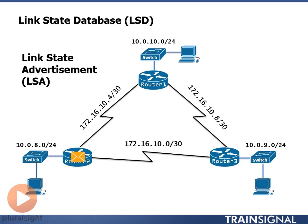A link state advertisement is a packet containing information about the networks directly connected to the advertising router. Router 2 can send out an LSA about network 10.0.8.0, one about 172.16.10.4, and one about 172.16.10.0. The neighboring router receives the LSA, adds the information into its link state database, increments a sequence number, and forwards the LSA on to all of its neighbors. When router 3 receives it and forwards it back to router 2, router 2 checks the sequence number, recognizes it as its own original LSA, and discards it.